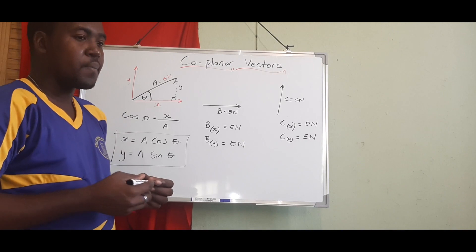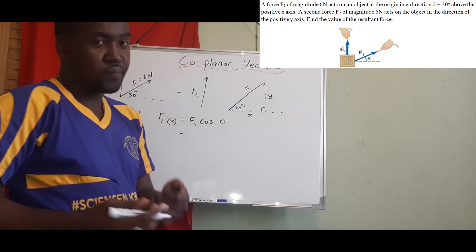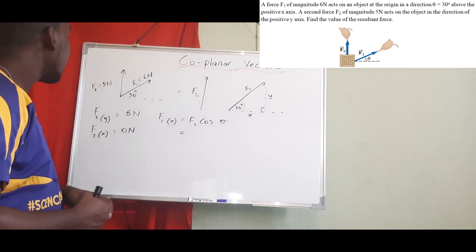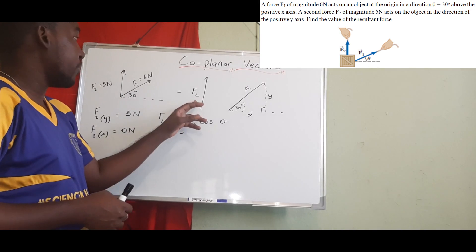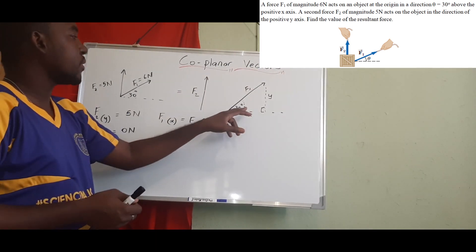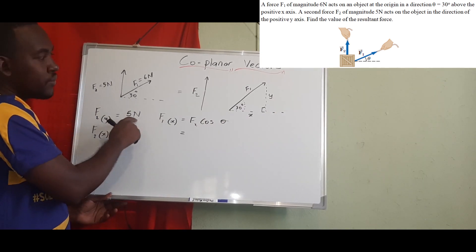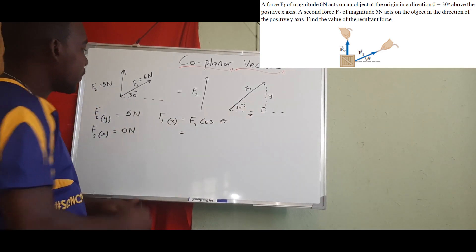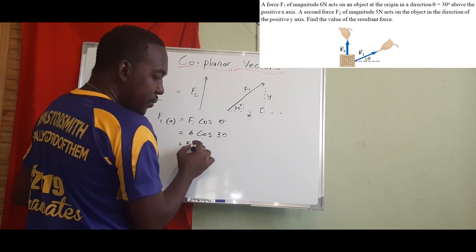For question one, we find the resultant vector acting on an object with two forces. F2 is going in the vertical plane, while F1 is acting at an angle of 30 degrees. F2 resembles our vector C — it only has a y-component of 5 newtons and no x-component. F1 has both x and y components. F1x = F1 cos θ = 6 cos 30° = 5.20 newtons.